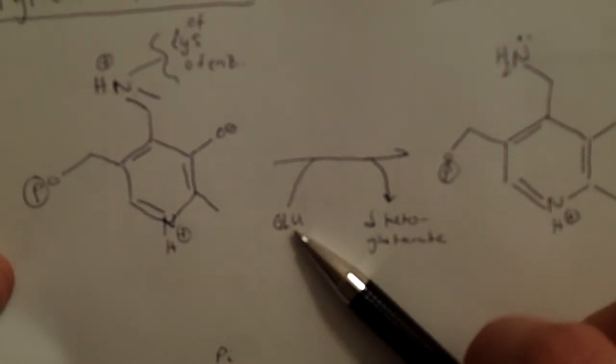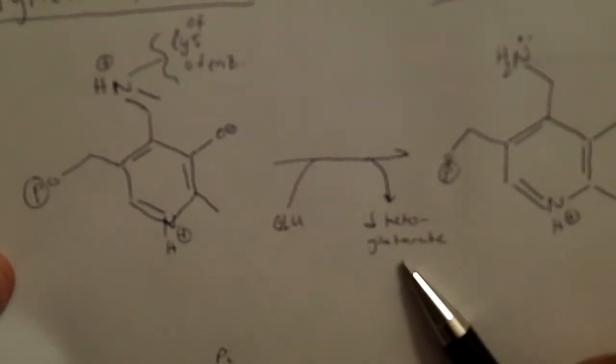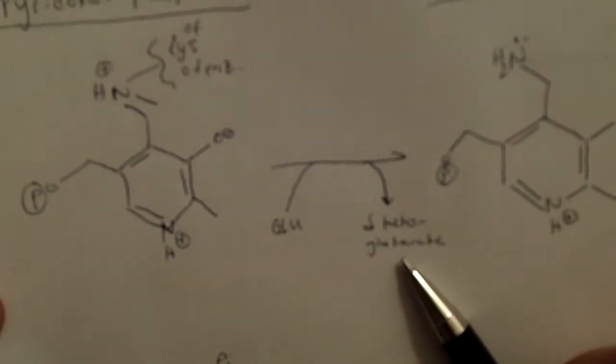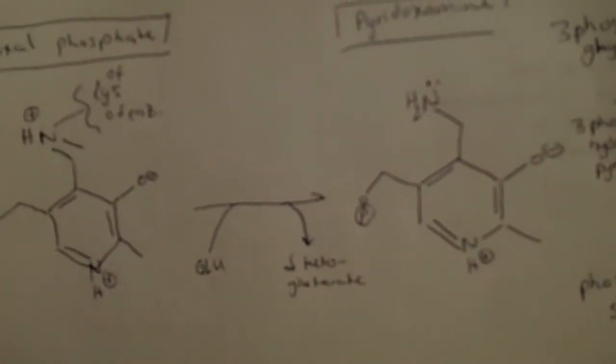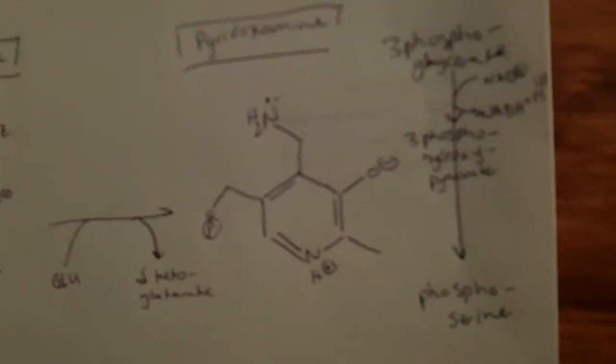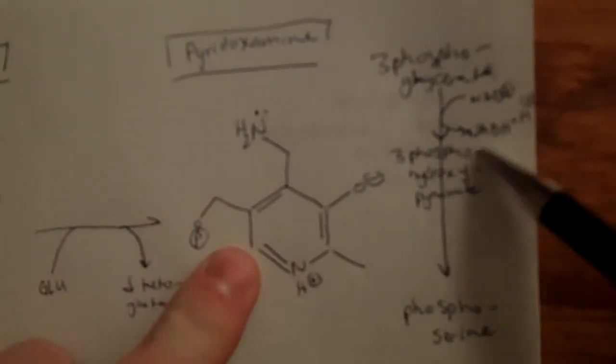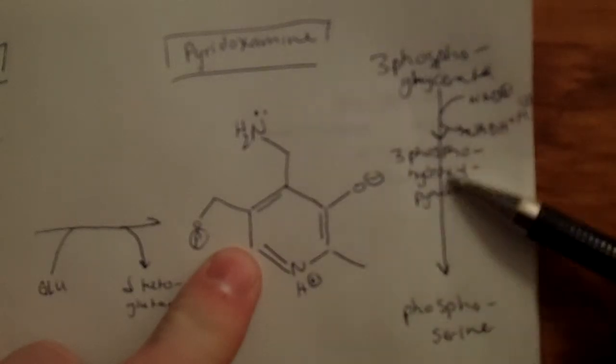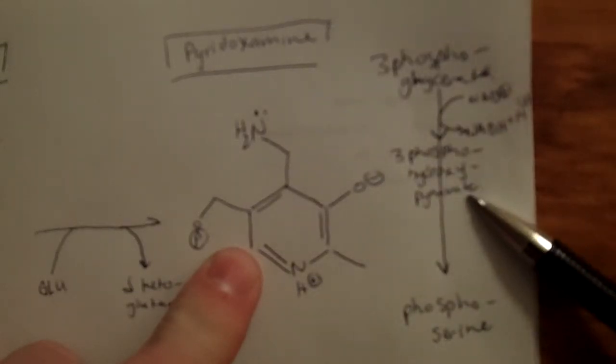I'm going to show this all in arrow pushing just to make it clear. Once you've got the pyridoxamine, you're going to transport it onto 3-phosphohydroxypyruvate to get the phosphoserine, which as I said we're going to dephosphorylate.